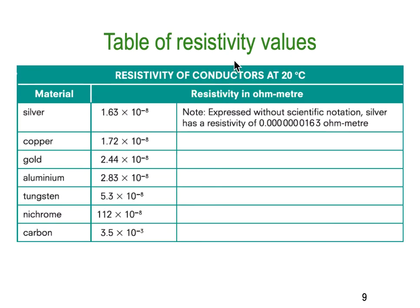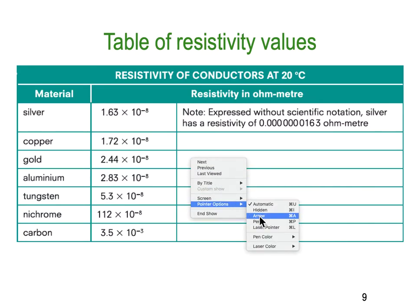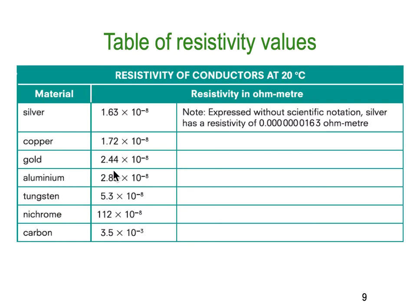Here's a table of resistivity to give you some idea of what each conductor is capable of. Silver is the best at 1.68, followed by copper at 1.72. Gold is not actually a fantastic conductor — it's only fractionally better than aluminium. Gold is nice and inert and doesn't react with other things, which has its advantages, but as a conductor it's not as impressive as you might think. Then we get up to tungsten, which we use for making elements in heaters and light globes. Nichrome is at 112, and carbon — which is not a metal but still a conductor — is at 3.5.